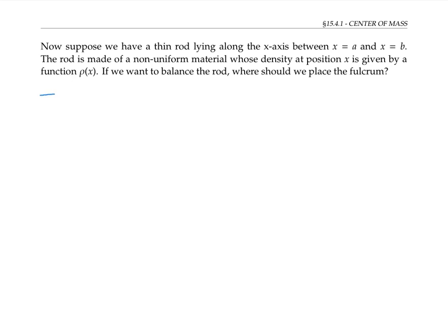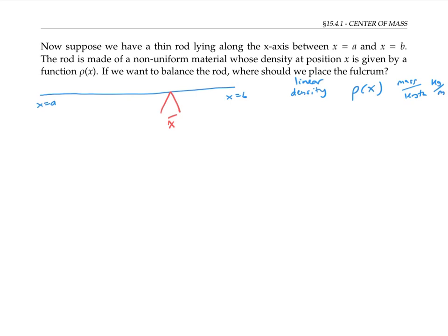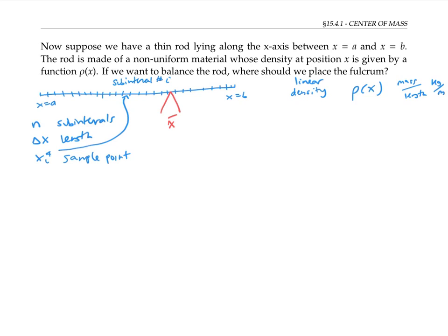Now let's suppose we have a thin rod lying along the x-axis between x = a and x = b. The rod is made of a non-uniform material whose density at position x is given by a function ρ(x) — a linear density, meaning mass per unit length, like kilograms per meter. To use our work from the previous problem, we'll divide the interval into n sub-intervals each of length Δx, and pick a sample point xᵢ* from each sub-interval. We think of each sub-interval as approximately like a kid on the seesaw.